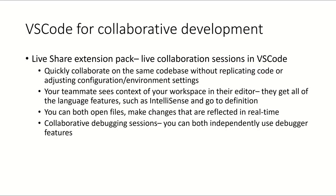Now I'm going to dive into how VS Code can be used for collaborative development. VS Code has a live share extension pack, which enables you to start live collaboration sessions directly in VS Code. It makes it really easy for you and your teammate to quickly collaborate on the same code base because you don't have to worry about replicating code or adjusting configuration or environment settings. Your teammate actually sees a context of your workspace in their editor, and they get all of the language features such as IntelliSense, go to definition, rename, and so on. Once you're both in the same collaborative session, you can both open files and navigate through the code, make changes, and these changes will be reflected in real time. You can even do collaborative debugging sessions so you can both independently use debugger features such as setting breakpoints or watching local variables.